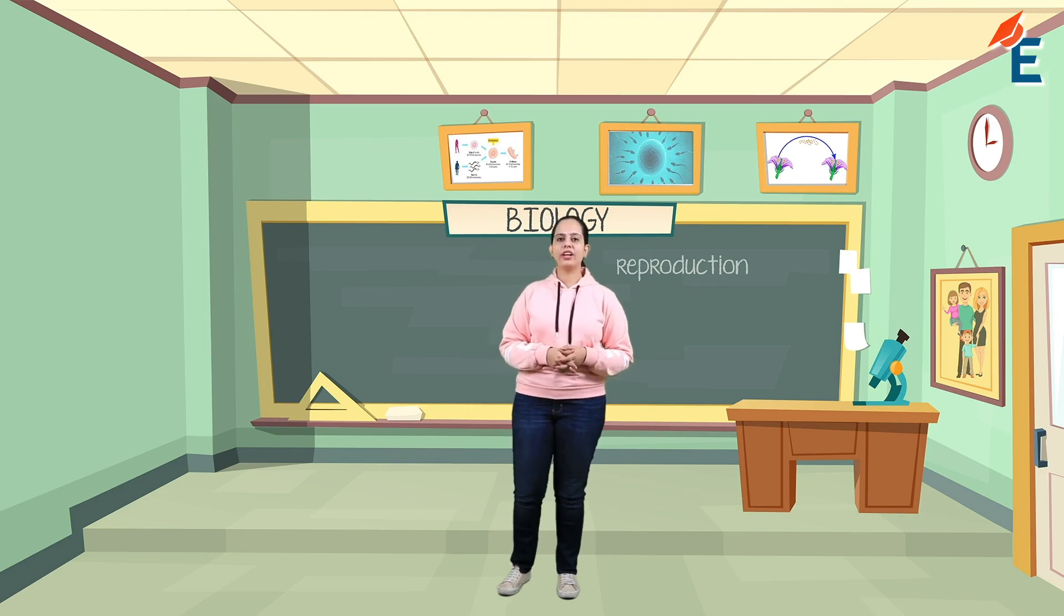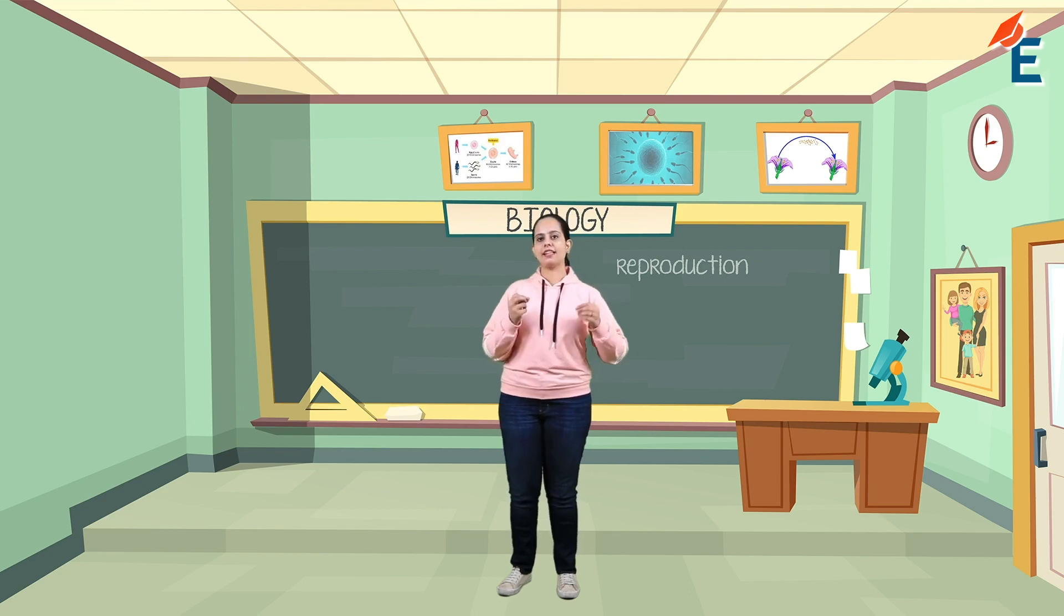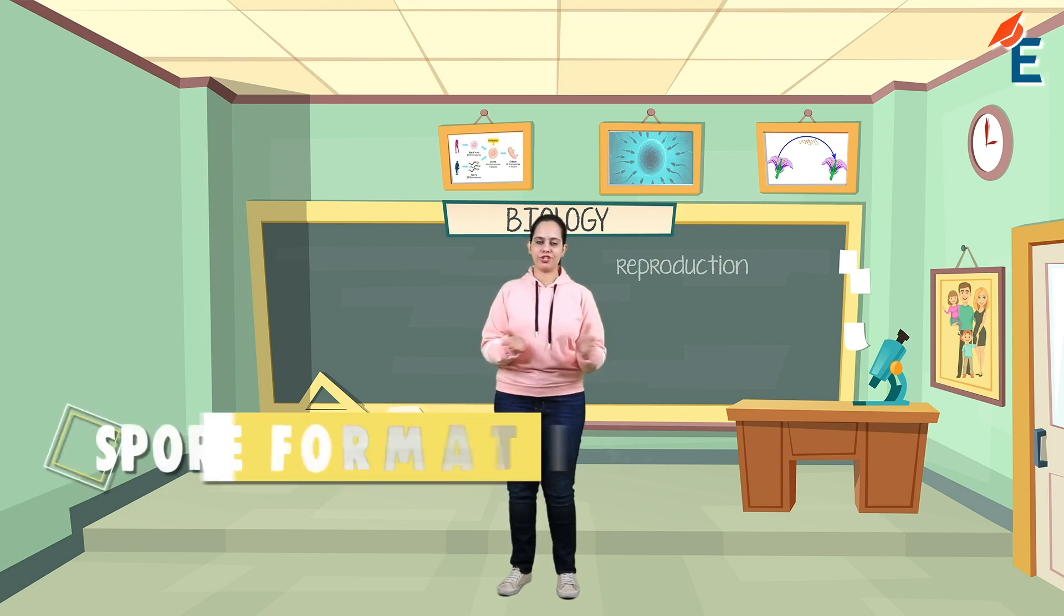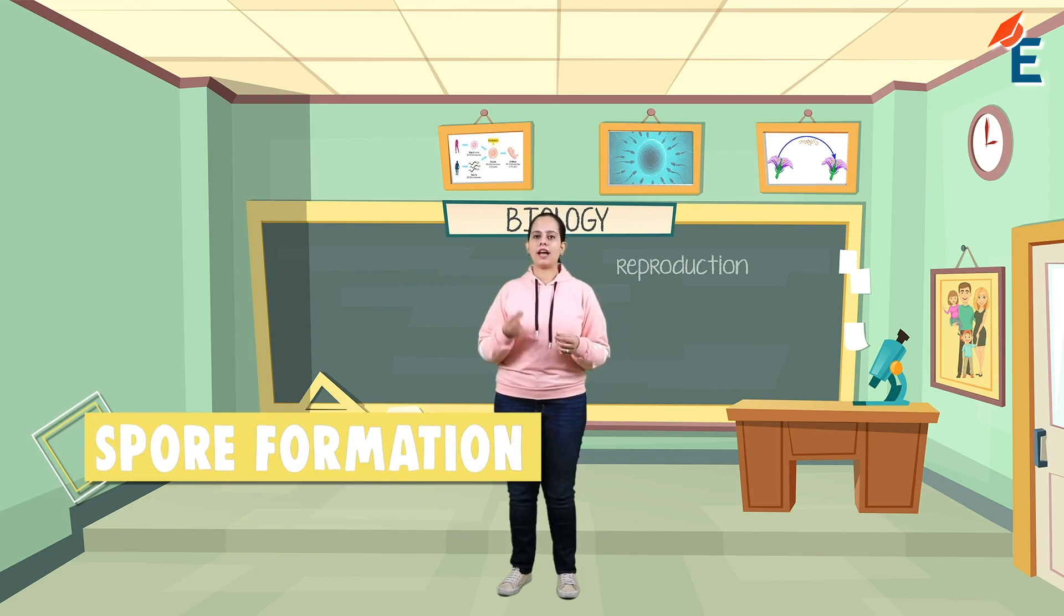Hello everyone and welcome back to the class. Previously we learned the second type of asexual reproduction. Now here comes the next type of asexual reproduction, and that is spore formation. What is a spore? It means a tiny particle substance.